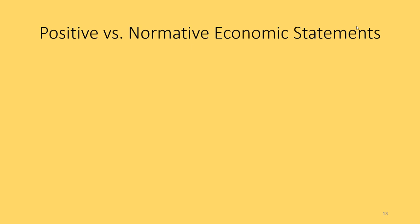Welcome back, Highlanders, to part two of chapter one. We left off in the last video talking about perverse incentives and secondary effects, and how those could cause the outcome of your policy to be the exact opposite of what you intended. Now we're going to pick it up starting with the difference between positive versus normative economic statements.